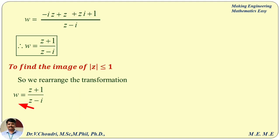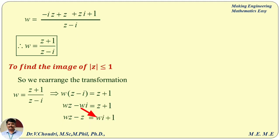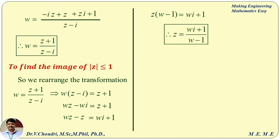Bring z minus i to the left-hand side: w times (z minus i) equals z plus 1. Multiplying w inside the bracket: wz minus wi equals z plus 1. Grabbing the z terms on the left-hand side: wz minus z equals wi plus 1. Taking z common: z times (w minus 1) equals wi plus 1. Therefore, z equals (wi plus 1) divided by (w minus 1). This is the required transformation for z in terms of w.